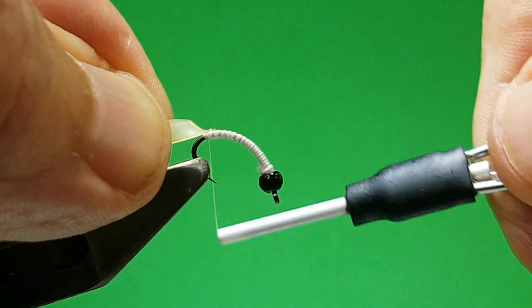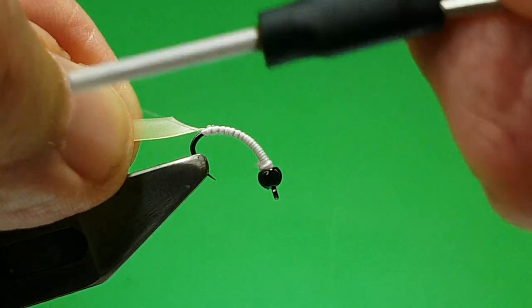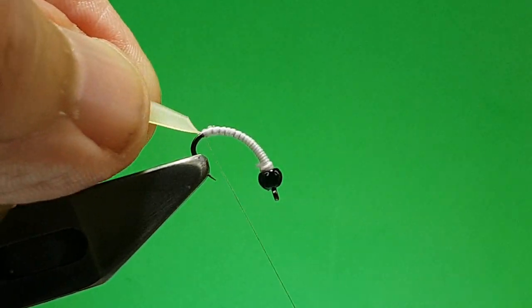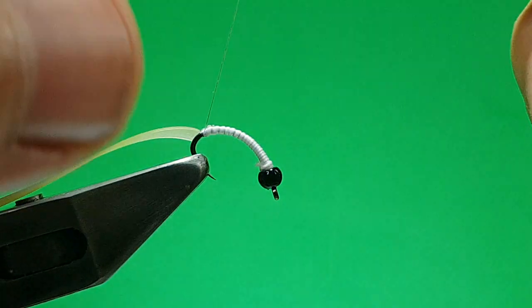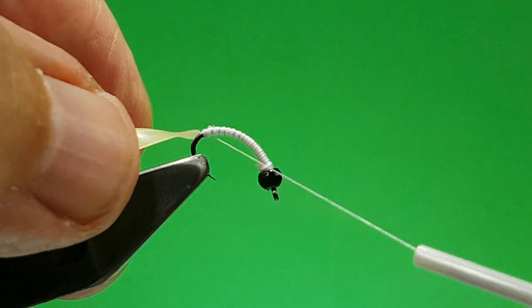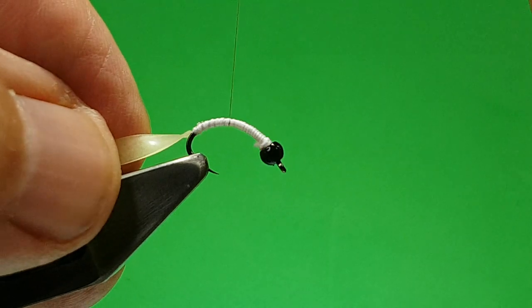Couple of small turns, and then pull the Nimskin back. Take your thread right off the back of the uni-stretch, and that'll lock it in, and then bring your thread back up. I don't rib this fly.